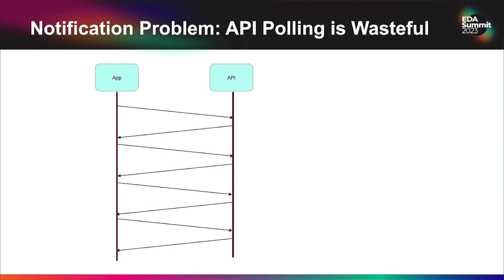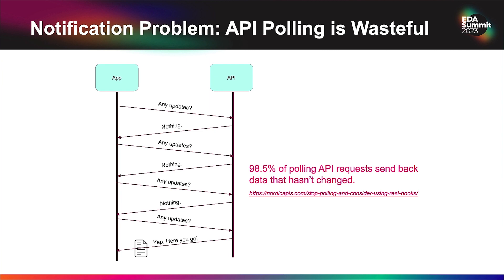Oftentimes we see the need for event-driven notification by way of API polling. This is where we have an application and API interacting with one another. The application asks the API: are there any updates to the data? The API says nothing's changed. A bit later: any updates? Still nothing. Any updates now? Oh yeah, here you go — here's a message with some update details. According to a poll conducted several years ago, 98.5% of polling API requests send back data that hasn't changed. So we're increasing the infrastructure cost to support all the traffic necessary to determine whether there's been an update.